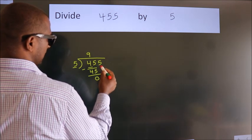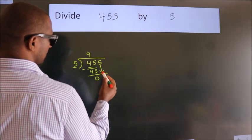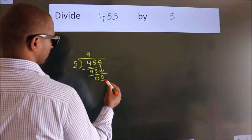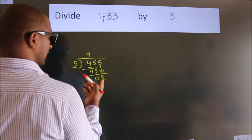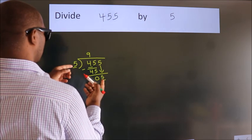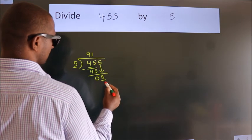After this, bring down the beside number. So, 5 down. 5. When do we get 5 in the 5 table? 5 nines, 5.